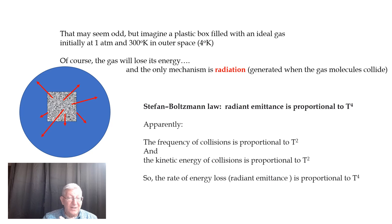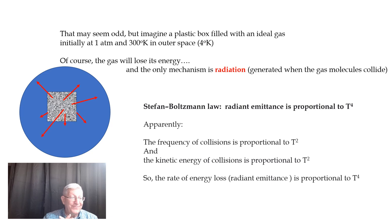We have something called the Stefan-Boltzmann Law. Radiant emittance — the amount of energy coming out of the system as radiation — is proportional to the absolute temperature T raised to the fourth power. As temperature increases, the frequency of collisions increases by a factor of T squared. And as the collisions occur between molecules moving faster, the amount of energy lost in each collision is also a function of T squared. T squared times T squared gives T to the fourth.